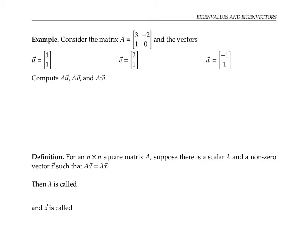Consider the two by two matrix given here, and the two by one vectors u, v, and w. Please pause the video for a moment and compute A times u, A times v, and A times w, and see if you notice anything interesting.